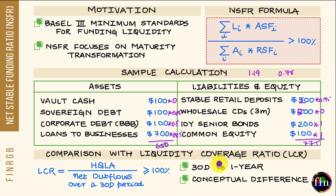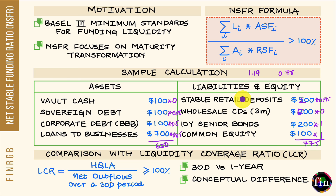The second difference is conceptual. The LCR focuses on what portion of assets are highly liquid and can be readily sold to meet outflows during a stressed period. The NSFR, instead, focuses on the funding mix of the institution — checking whether the funding is stable and resilient enough. This video covered the motivation behind the NSFR, its formula, how to calculate it, and how it compares with the LCR.